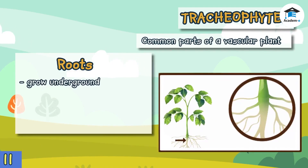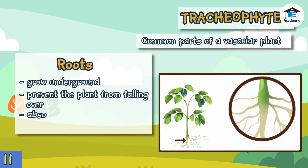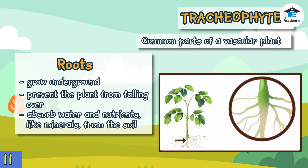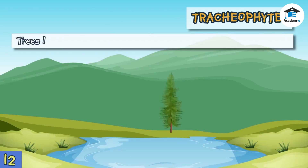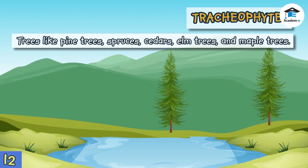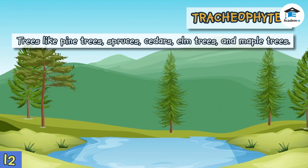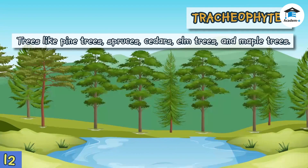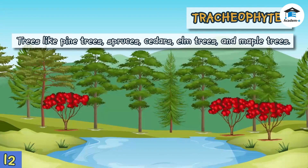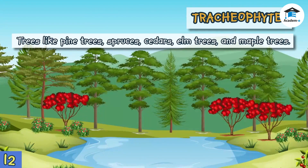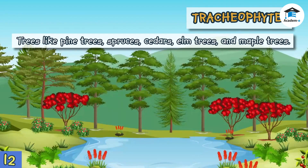Roots grow underground; they help prevent the plant from falling over and absorb water and nutrients like minerals from the soil. Tracheophytes include trees like pine trees, spruces, cedars, elm trees, and maple trees. It also includes many shrubs with woody stems that grow very tall, such as grasses, tomato plants, club mosses, horsetails, ferns, sunflowers, and lilies.